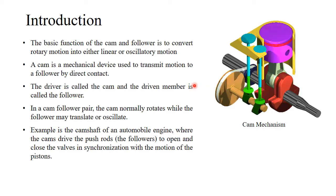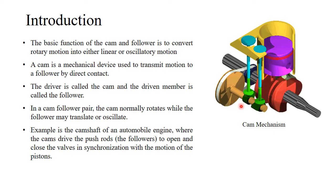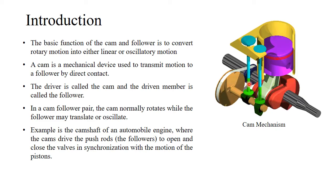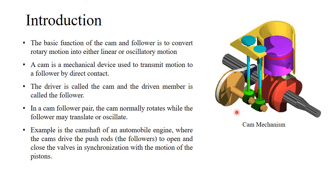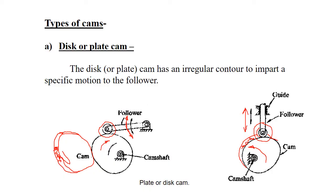The driver element is called the cam, and the driven member — the green colored flat disc and rod — is called the follower. In a cam and follower pair, the cam normally rotates while the follower may translate or oscillate, as already explained in the engine valve example.